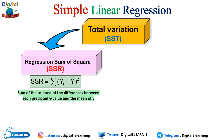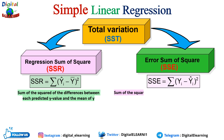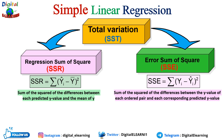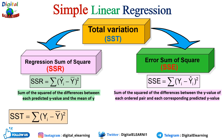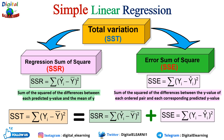The other component is the error sum of squares, SSE, which quantifies the variation due to factors other than the relationship between x and y. This is called unexplained variation. SSE = Σ(yᵢ − ŷᵢ)², the sum of squared differences between the observed y value and each corresponding predicted y value. SST is then the summation of SSR plus SSE — the total sum of squares representing the sum of explained and unexplained variations.